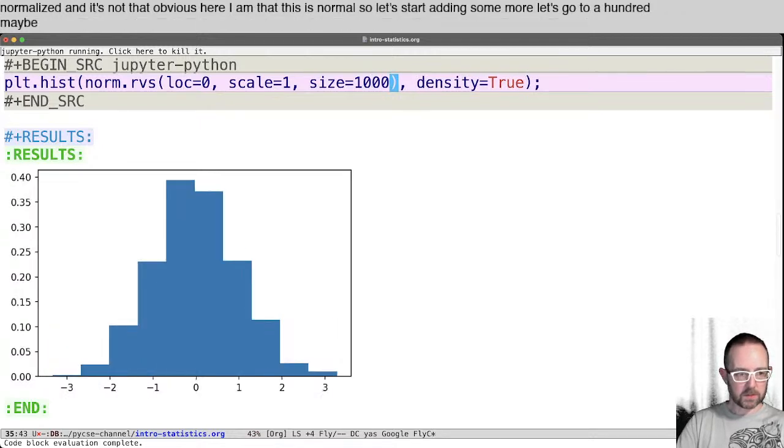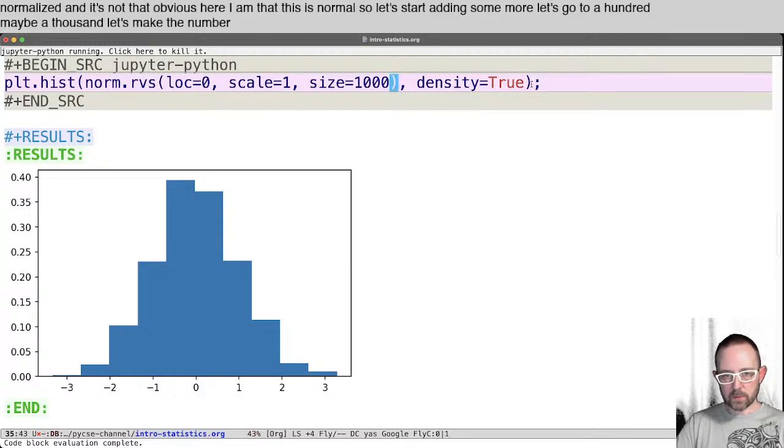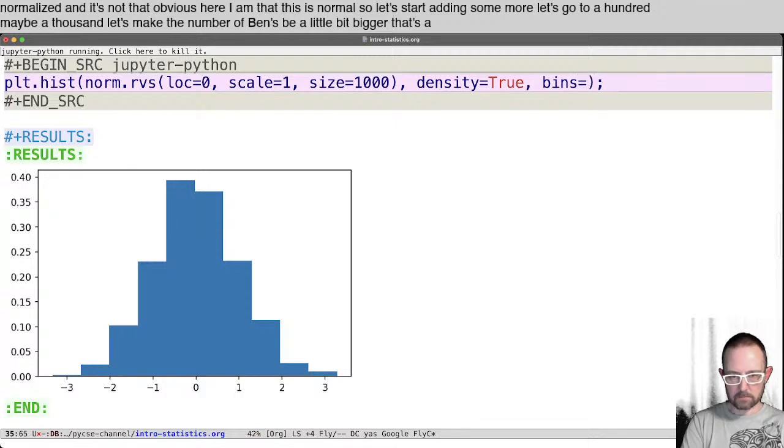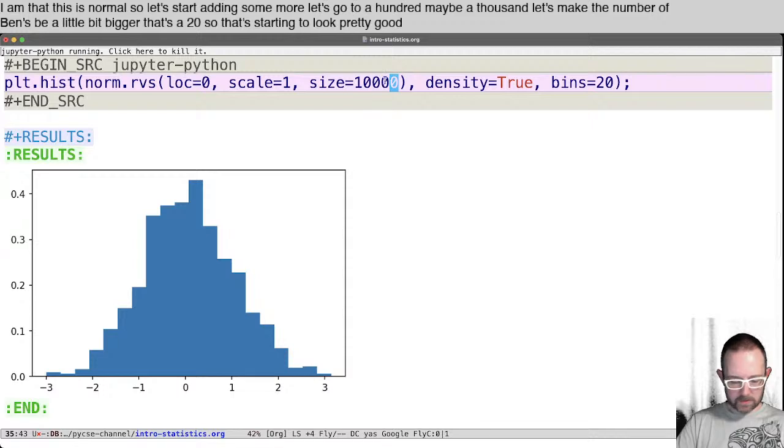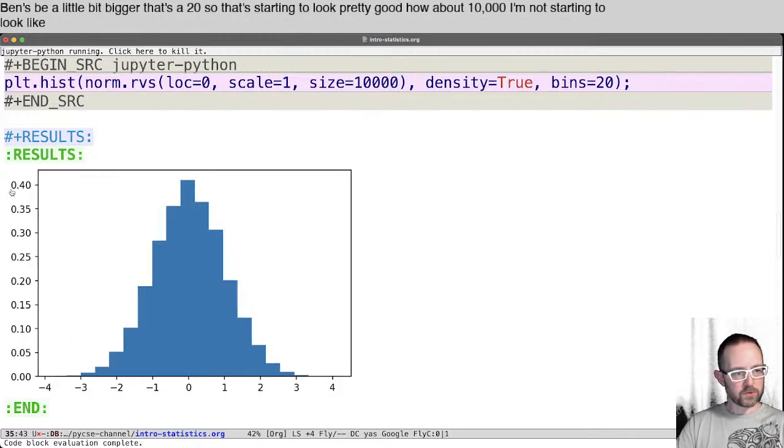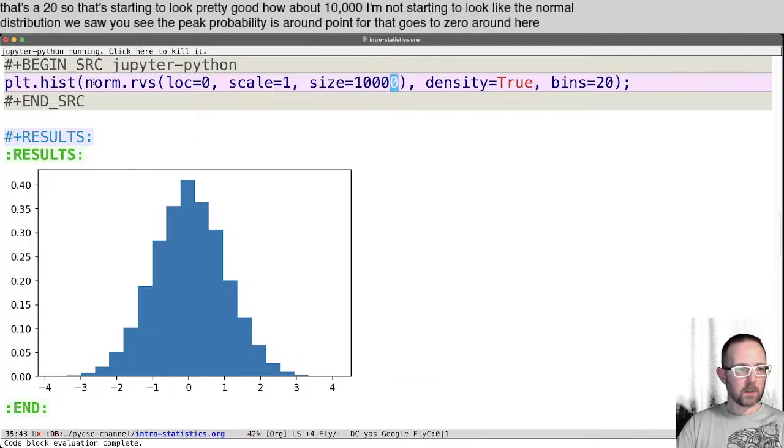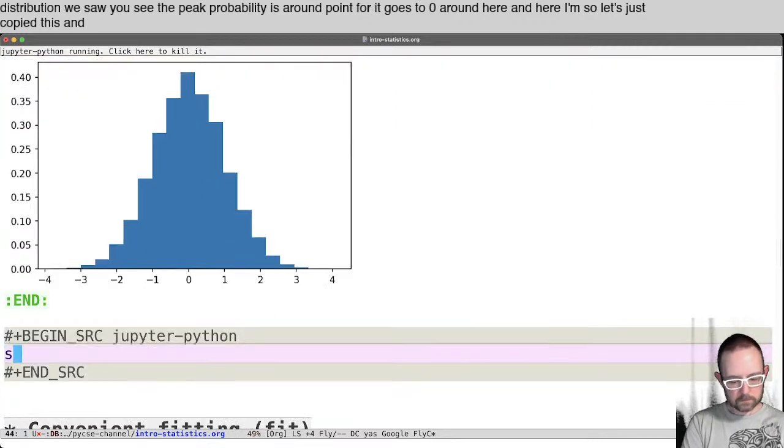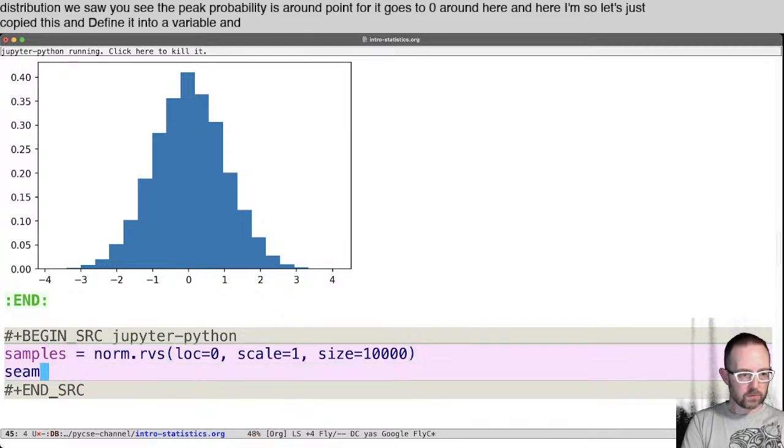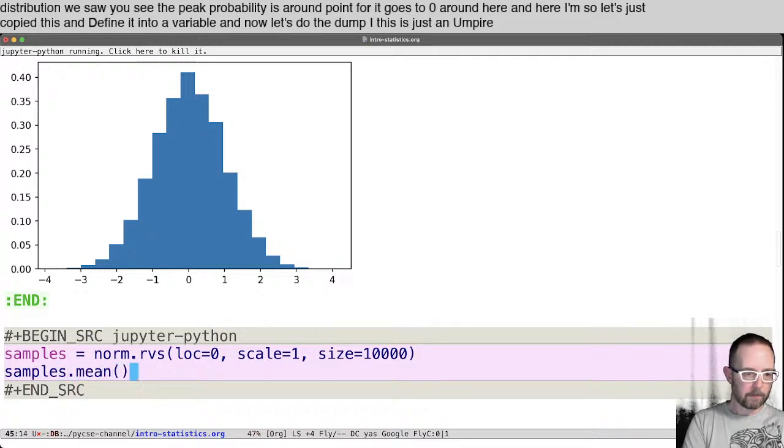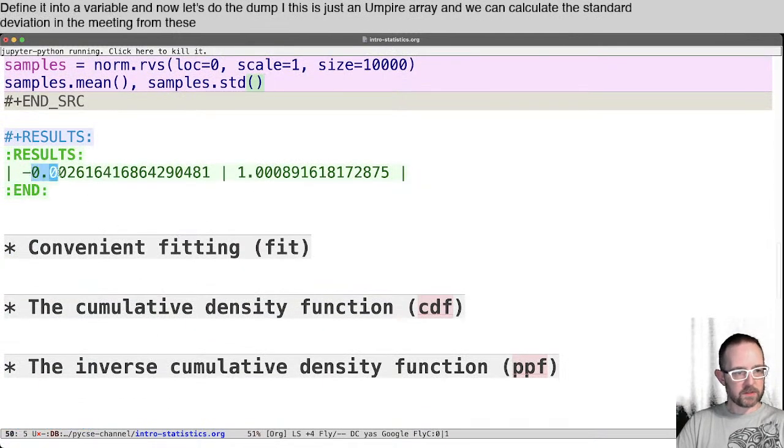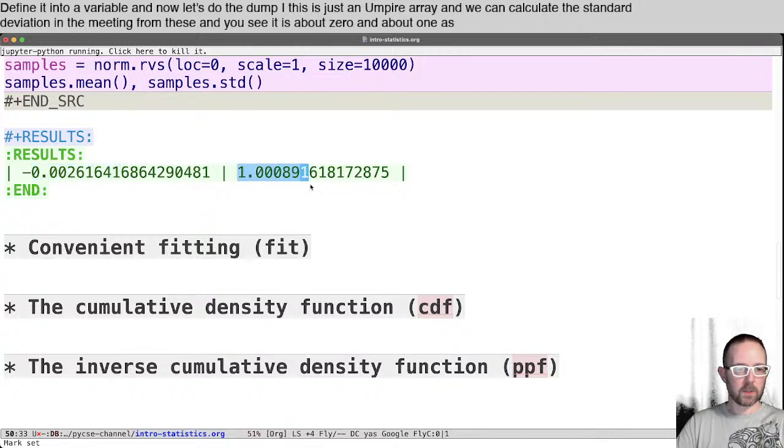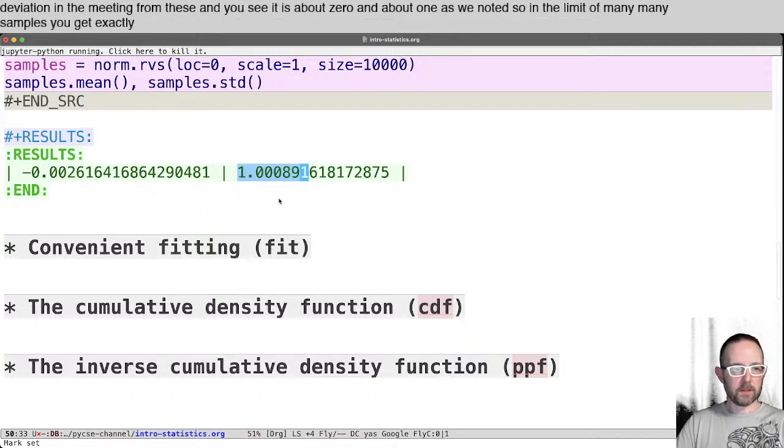And when we do that, we want to make the density to be true so that we see it to be normalized. And it's not that obvious here that this is normal. So let's start adding some more. Let's go to 100, maybe 1000. Let's make the number of bins be a little bit bigger. Let's say 20. So that's starting to look pretty good, about 10,000. That's starting to look like the normal distribution we saw. You see the peak, the probability is around 0.4. It goes to zero around here and here. So let's just copy this and define it into a variable. And now let's do the numpy. This is just a numpy array. And we can calculate the standard deviation and the mean from these. And you see it is about zero and about one as we noted.